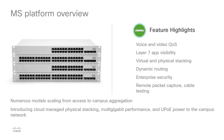Layer 7 application visibility, previously only available through costly overlay appliances, is included in Cisco Meraki switches at no additional cost. Hundreds of applications are automatically identified and reported, from business apps to BitTorrent and YouTube. Rather than separately managing each switch, switches can be grouped together in virtual stacks regardless of how physically dispersed they may be. For high performance and management convenience, switches can also be physically stacked and managed as a single entity.